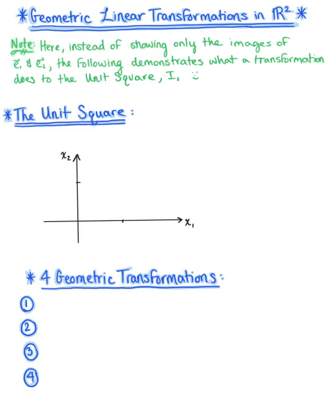Here we are looking at geometric linear transformations in R2. Since matrix transformations are linear, we know that these transformations are completely determined by how they affect the column vectors of the identity matrix. In this section, instead of simply showing all of the images of the elementary vectors e sub 1 and e sub 2, we're going to be looking at what a transformation does to the identity matrix geometrically.